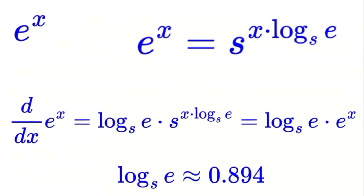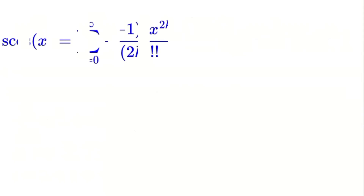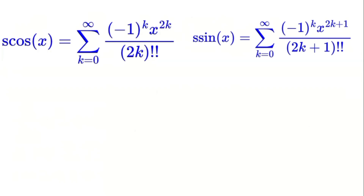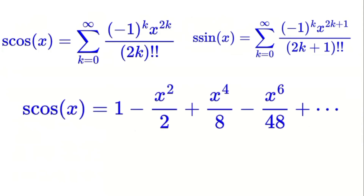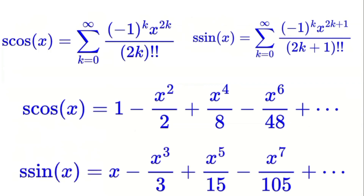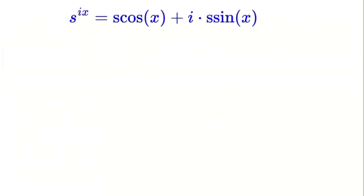Let's define the S trigonometric functions using the improved S-function. We have S cosine of X, defined as the sum from K equals 0 to infinity of negative 1 to the power of K times X to the power of 2K divided by 2K double factorial. Similarly, S sine of X is defined as the sum from K equals 0 to infinity of negative 1 to the power of K times X to the power of 2K plus 1 divided by 2K plus 1 double factorial. The first few terms of S cosine of X are 1 minus X squared over 2 plus X to the 4th over 8 minus X to the 6th over 48, and so on. For S sine of X: X minus X cubed over 3 plus X to the 5th over 15 minus X to the 7th over 105, and so on. These functions are related to S to the power of X through the identity S to the power of I times X equals S cosine of X plus I times S sine of X — similar to Euler's formula but using the improved S-function.